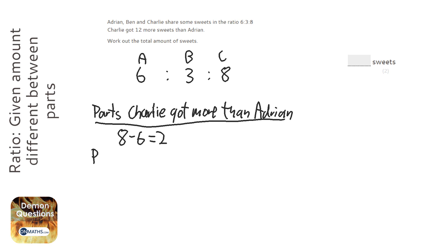And so let's have a look and see what 1 part is worth. So those 2 parts equates to 12 more sweets. So we do 12 divided by 2, which is 6. So each part is worth 6 sweets.